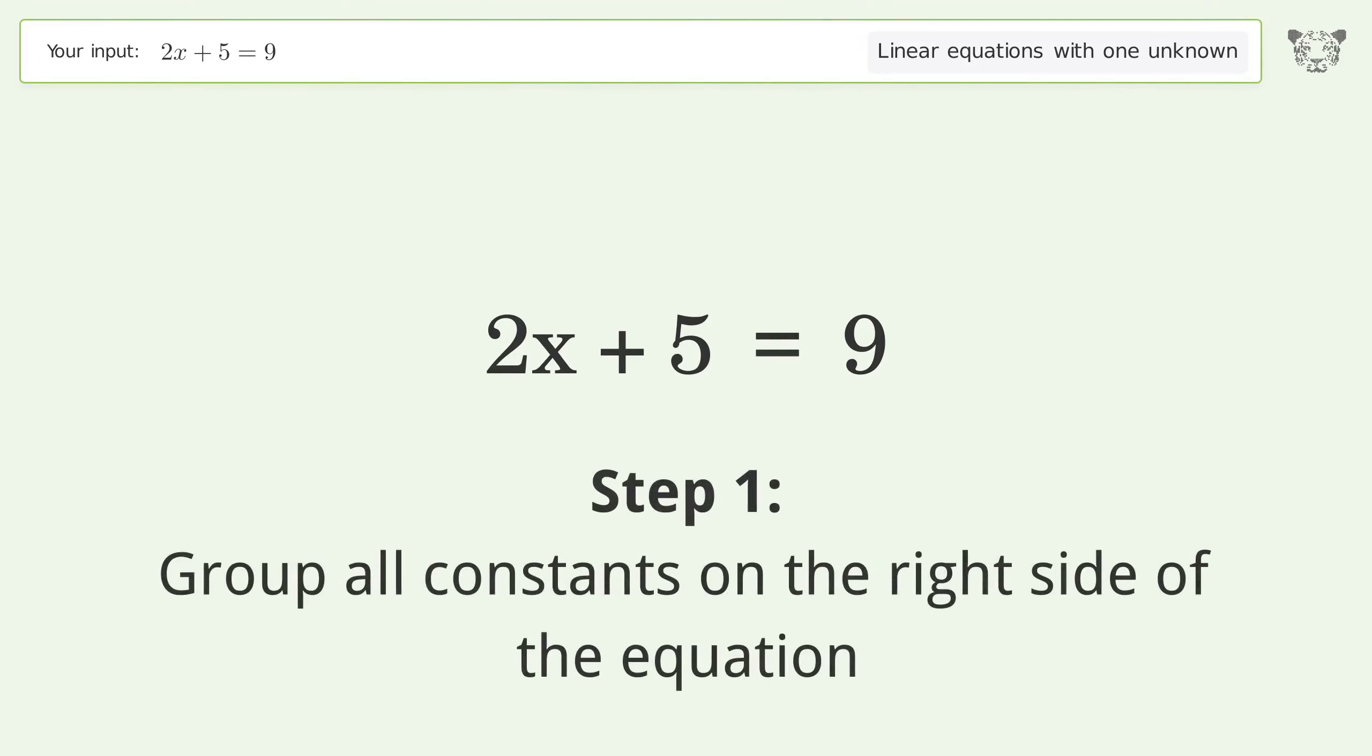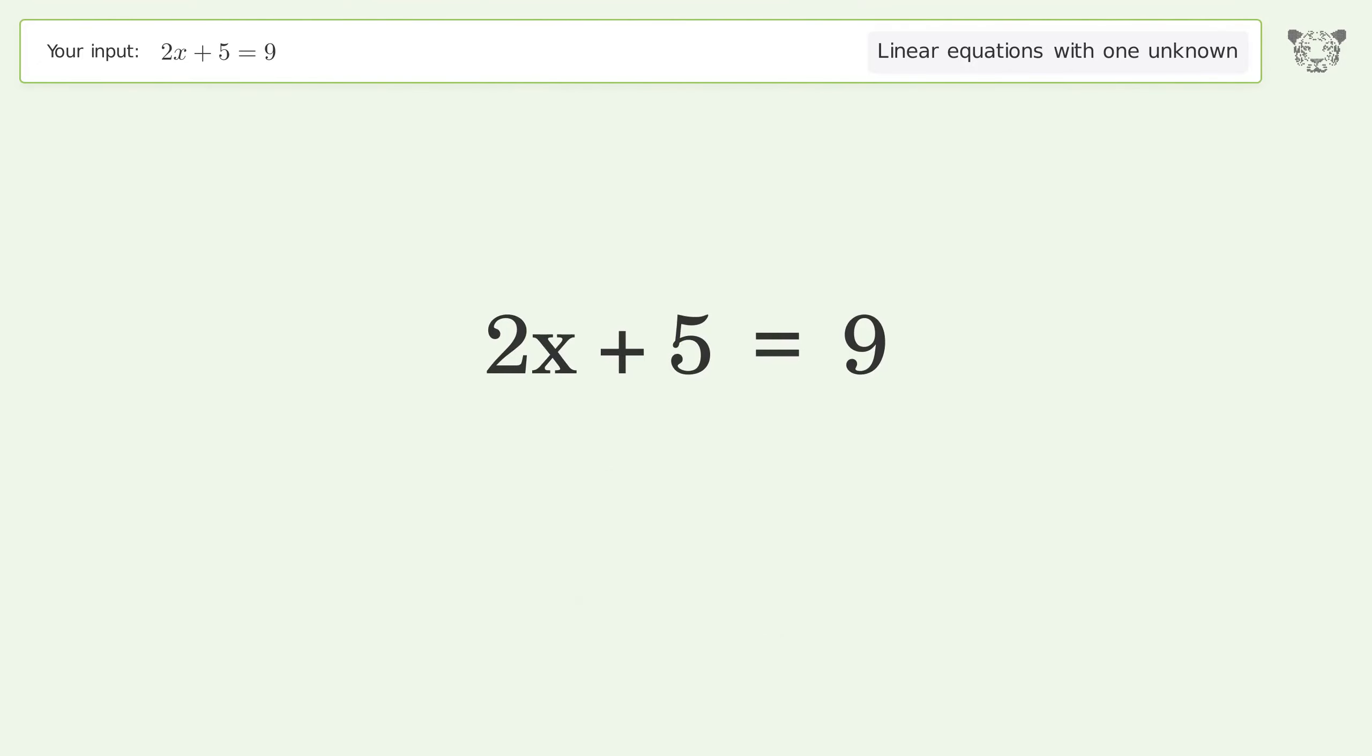Group all constants on the right side of the equation. Subtract 5 from both sides. Simplify the arithmetic.